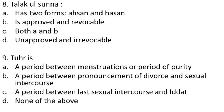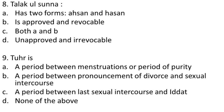Question 8: Talak ul Sunna — (A) has two forms, Ahsan and Hasan, (B) is approved and revocable, (C) both A and B, (D) unapproved and irrevocable. The answer is C, both A and B. Talak ul Sunna has two forms — Ahsan and Hasan — and it is approved and revocable.